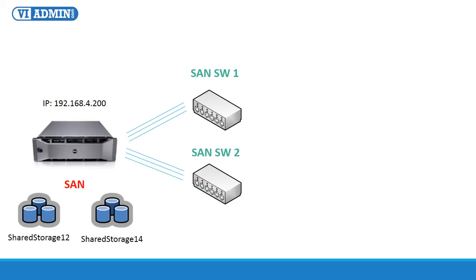The iSCSI SAN has two LUNs — shared storage 12 and shared storage 14 — that you can use to place virtual machines on. They also play a critical role in installing and configuring VMware's advanced features such as vMotion, HA, DRS, and fault tolerance. You need shared storage for all of these features to work. The two LUNs also allow you to do storage vMotion, which is migrating running VMs from one LUN to the other.